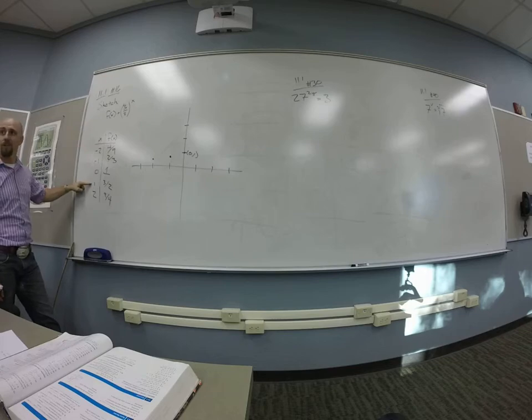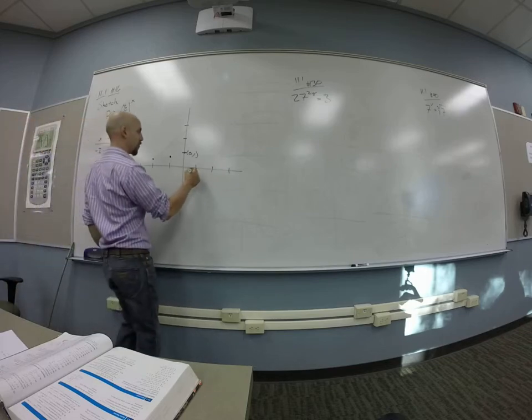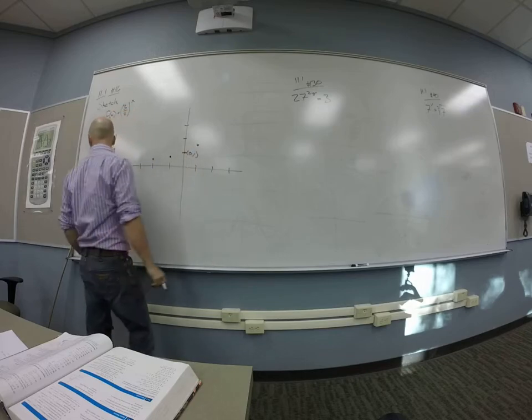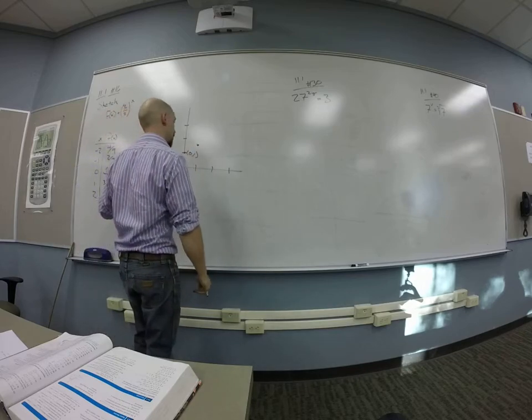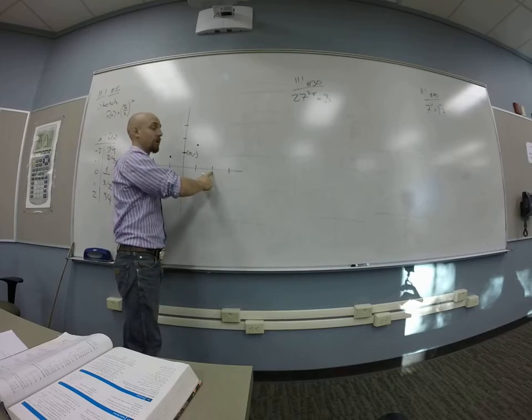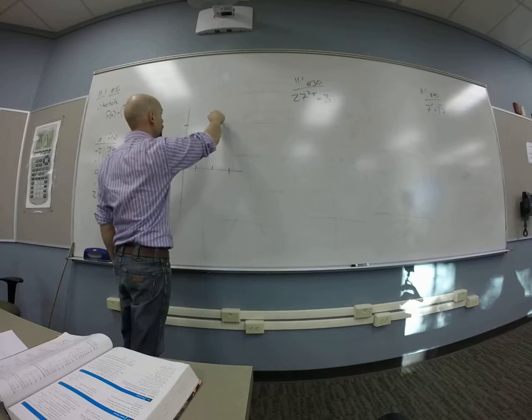1 and 3 halves, 1.5. 3 halves is 1 and a half, so that should be like here. And the other guy should be 2 over, up 2 and a quarter, so 1, 2 and a bit.